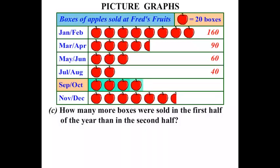September-October: 20, 40, 60, 80 — let's write the 80 down. And November-December: 20, 40, 60, 80, 100, 120 — and then half an apple worth 10 boxes. So 120 plus 10 is 130.